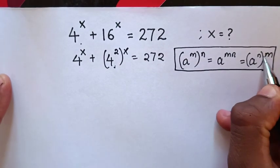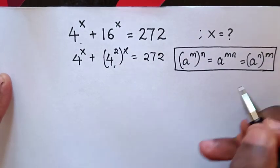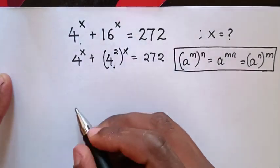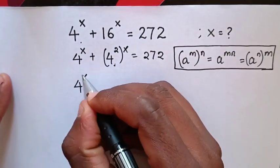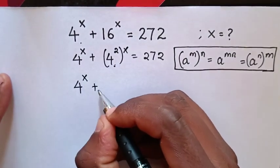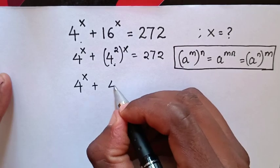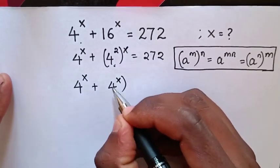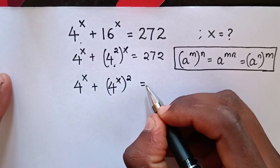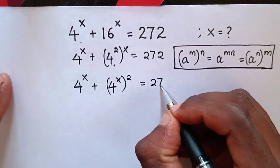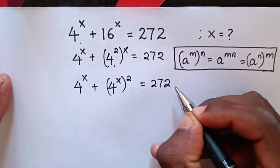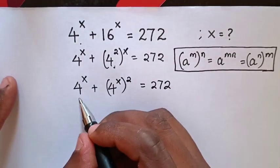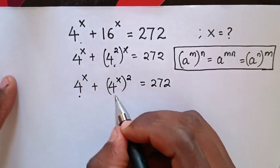So we exchange the powers, and it becomes 4 power x plus 4 power x, inside the bracket power of 2, equals 272. From here we can see that 4 power x is a common factor.